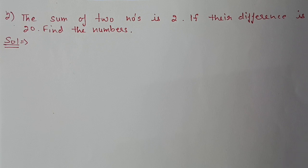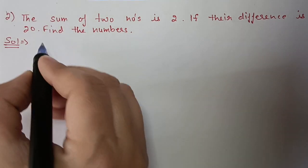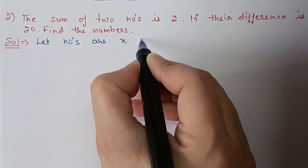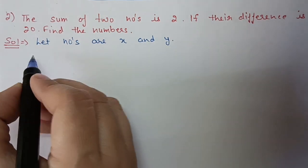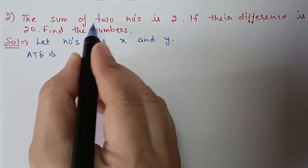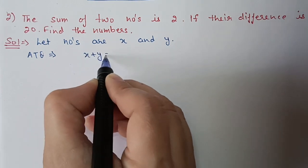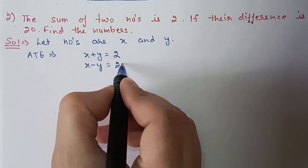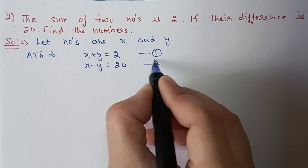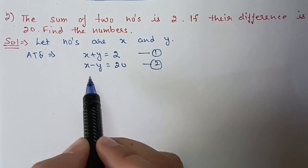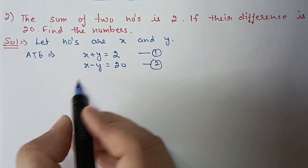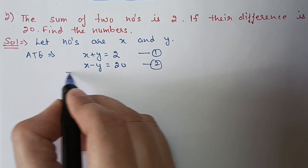Second question: the sum of two numbers is 2 and their difference is 20 — find the numbers. Let the numbers be x and y. Framing the equations: x + y = 2 is equation 1, and x − y = 20 is equation 2. I am using the elimination method here.